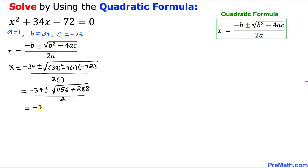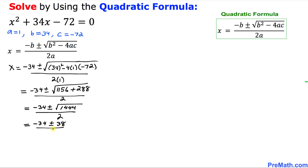Continuing further: negative 34 plus or minus — if we add 1156 and 288, that gives us 1444, divided by 2. So that gives us negative 34 plus or minus the square root of 1444, which is 38, divided by 2.